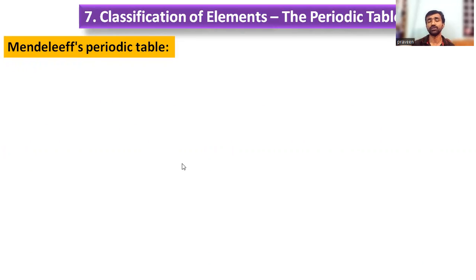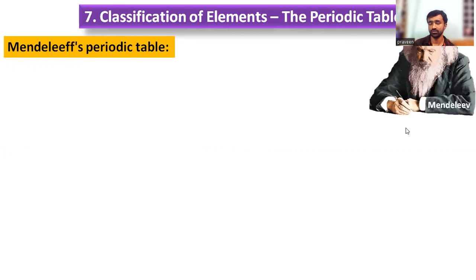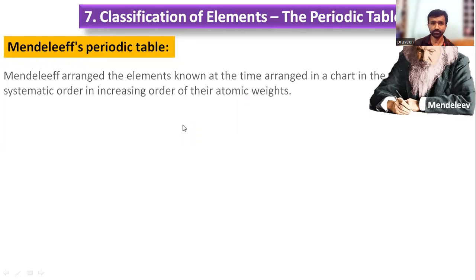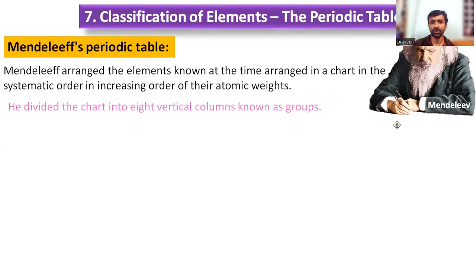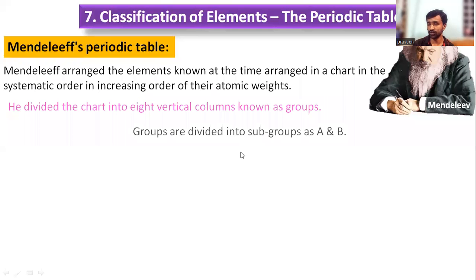We have discussed the main important observations in Mendeleev's periodic table. It was proposed by Mendeleev, who divided the periodic table into vertical columns and horizontal rows. Vertical columns are given as groups and horizontal rows are called as periods.